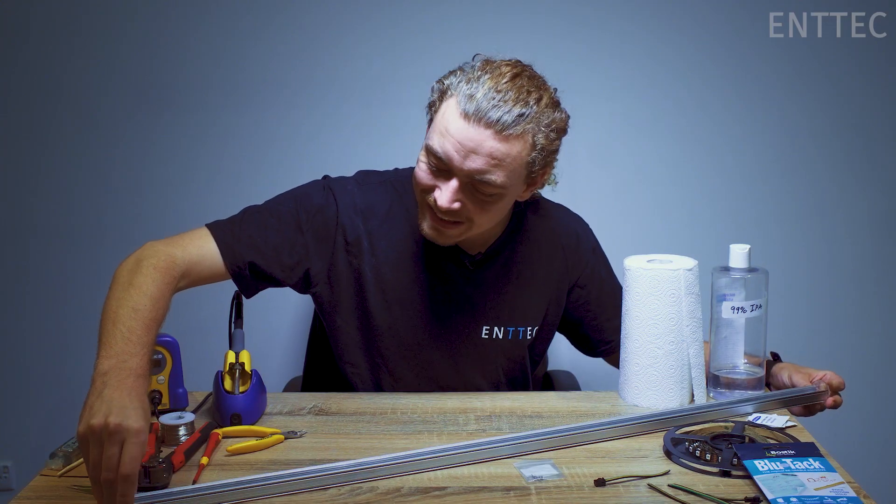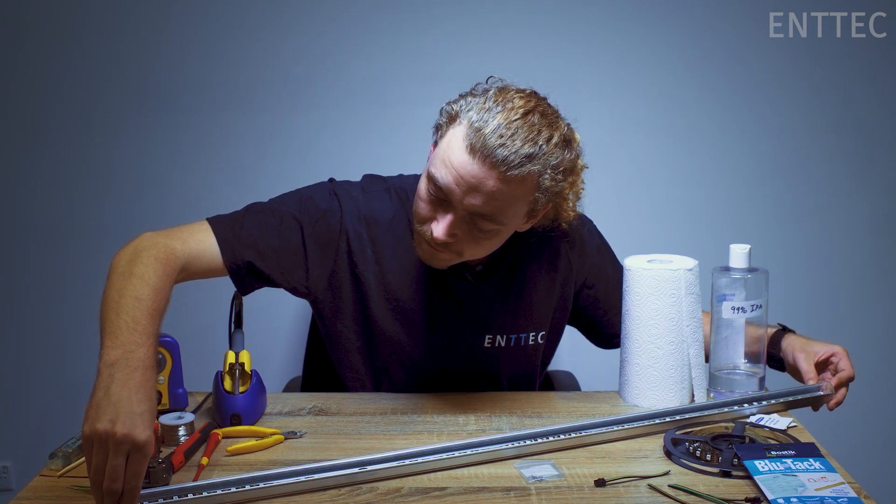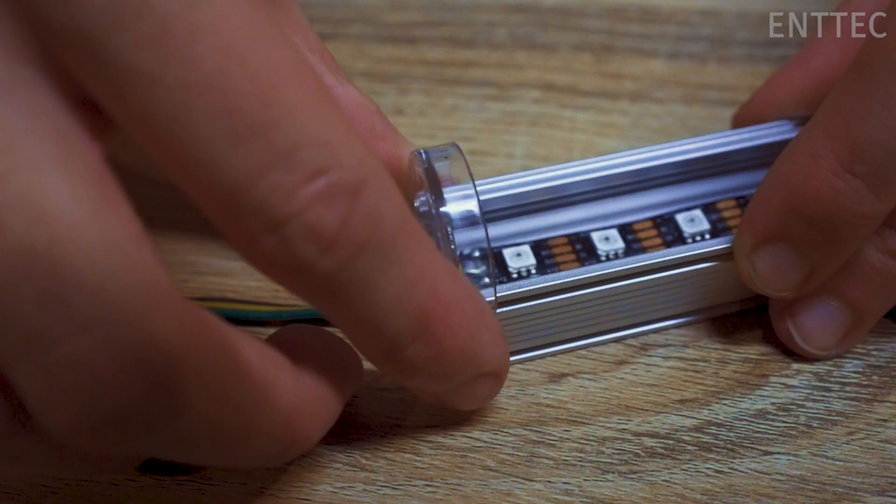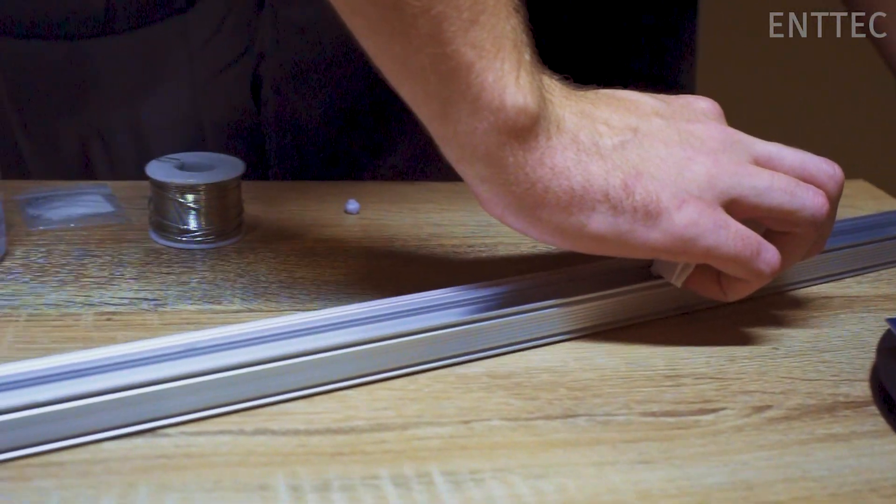Next, place your LED tape and the end caps onto your extrusion and test to see if they fit. With your connector attached and your dry fit complete, you can now prepare and clean your aluminium extrusion with isopropyl alcohol.